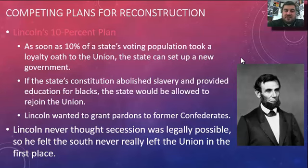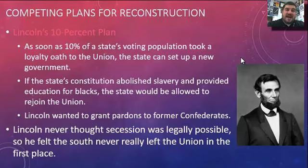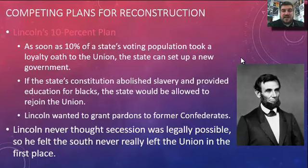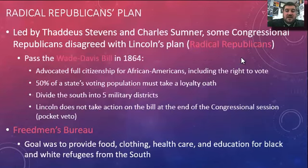Lincoln had his 10% plan ready since about 1863, halfway through the war. It states that as soon as 10% of a state's voting population takes a loyalty oath to the Union, the state can set up a new government. If that new constitution abolishes slavery and provides education for blacks, the state could petition Congress to rejoin the Union. Lincoln wanted to grant full pardons to former Confederates, viewing secession as never legally valid — meaning the South never truly left. Unfortunately, Lincoln is assassinated by John Wilkes Booth at Ford's Theatre in Washington, D.C., about a week after the war ended.